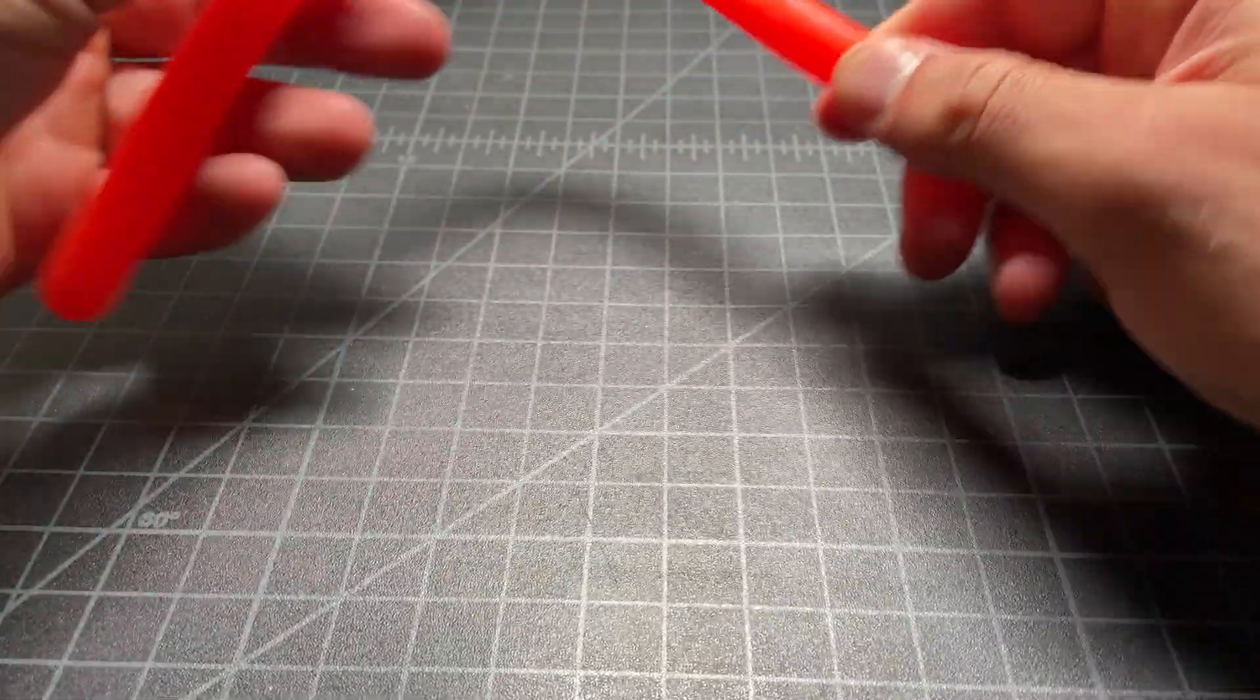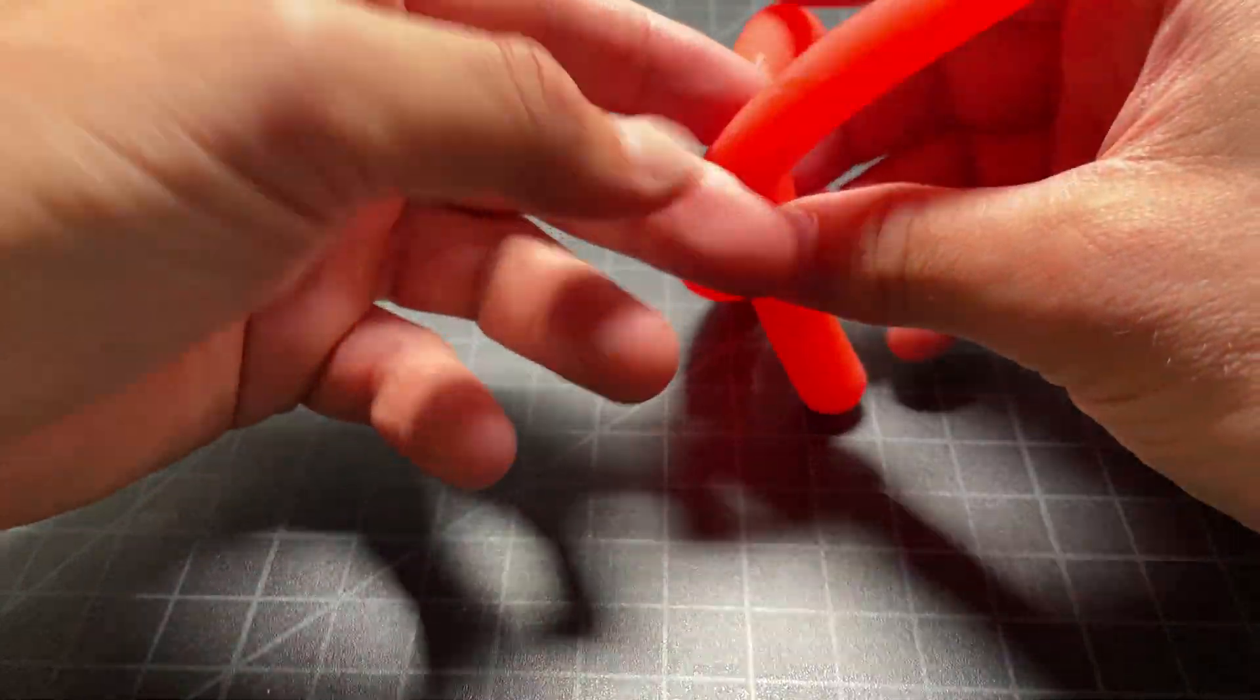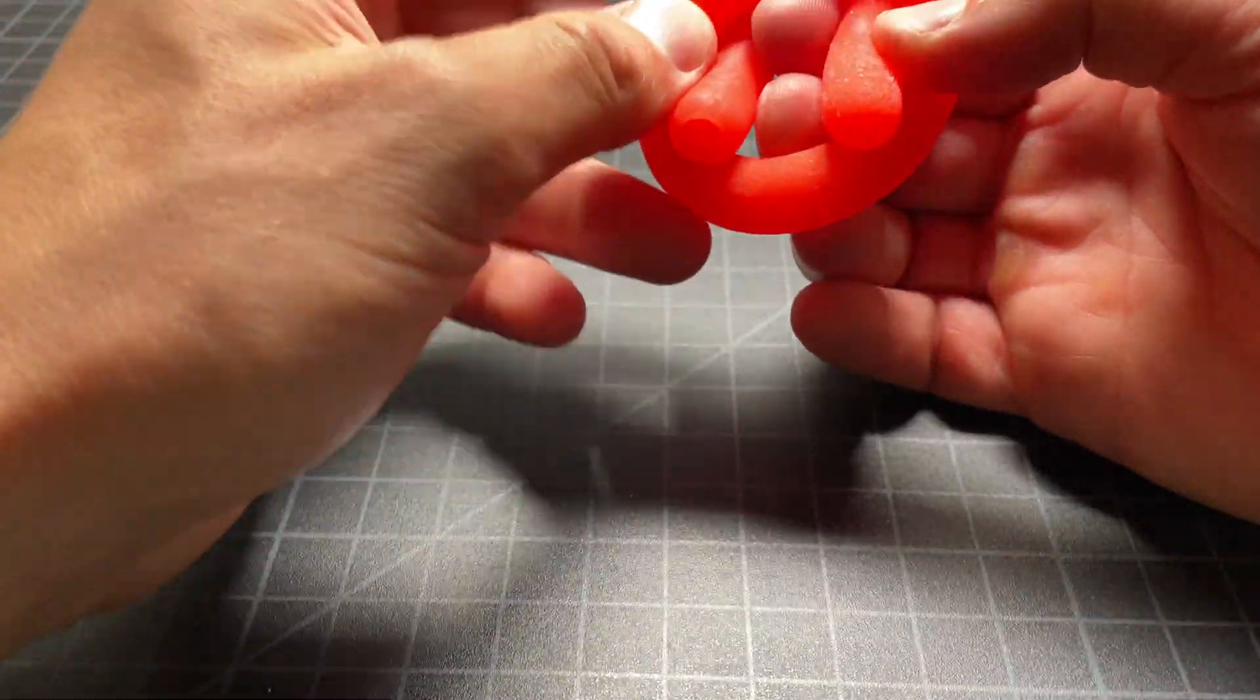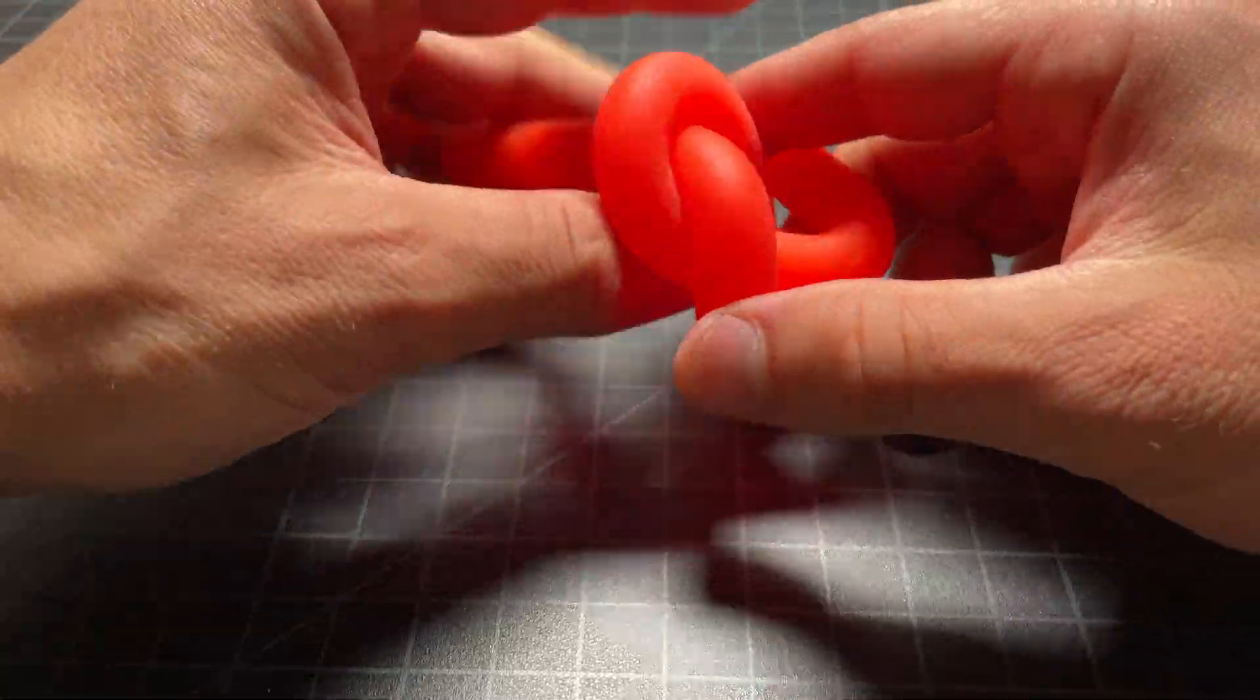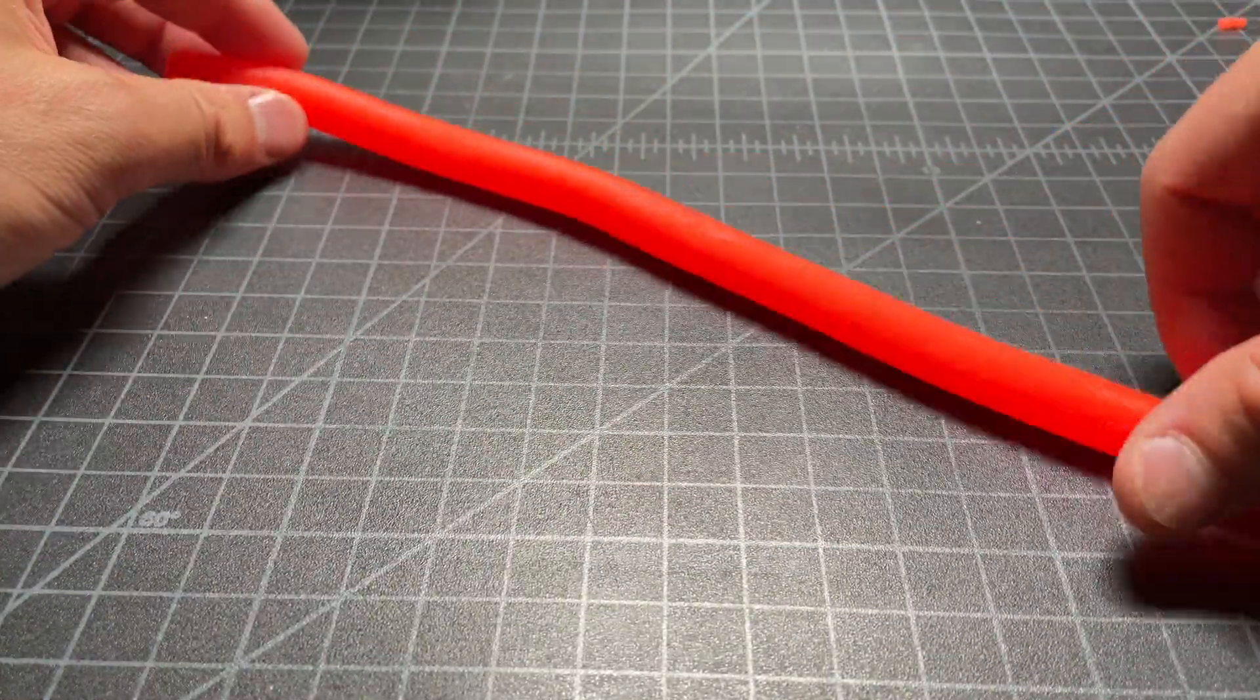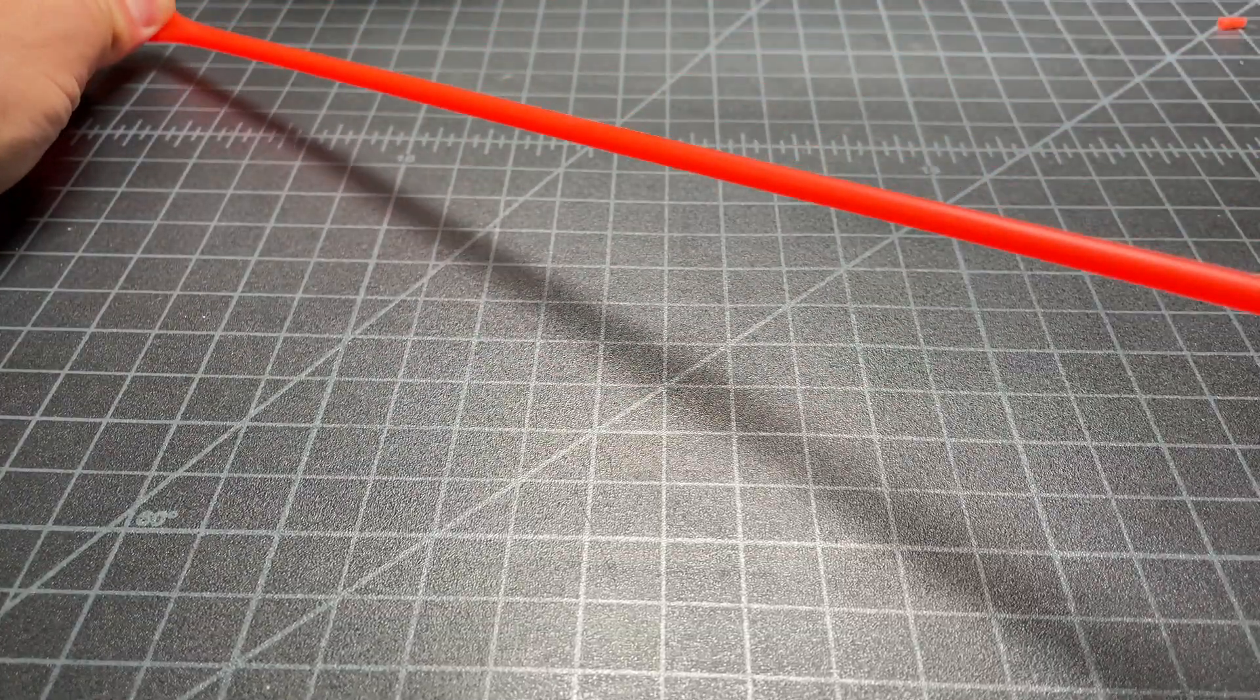Basically you play with it by stretching it. You could twirl it around, you could tie it in a knot. You could stretch these things the company says up to eight feet, so it's about a foot long. You could stretch it maybe six feet, about five or six times its length.